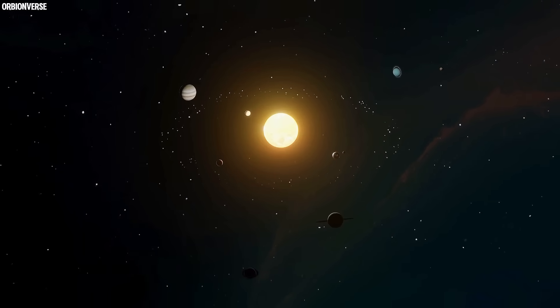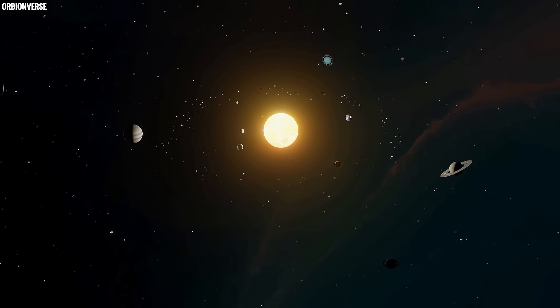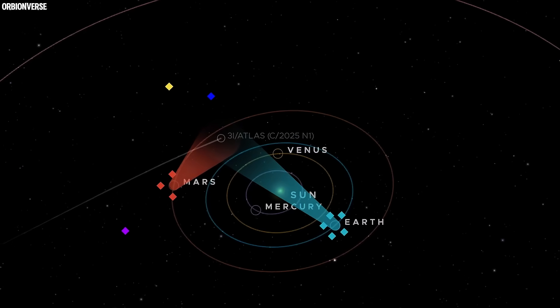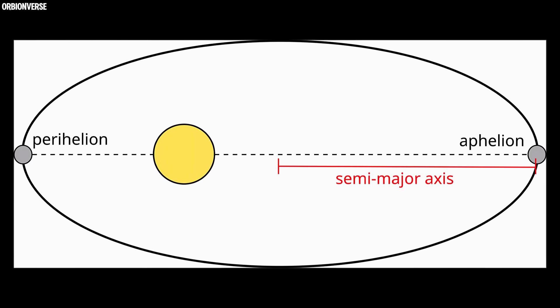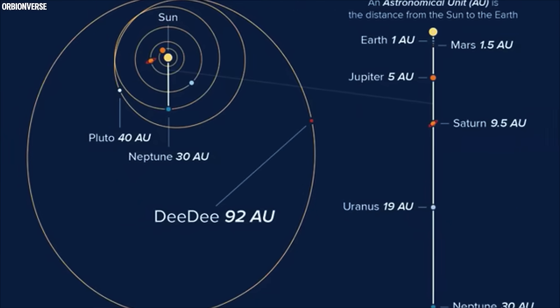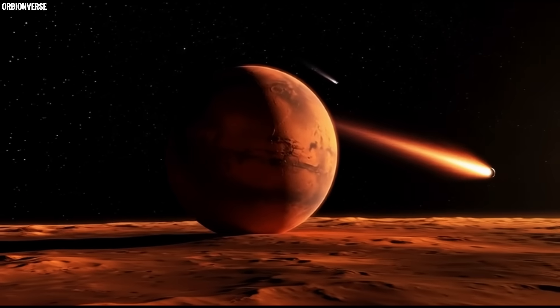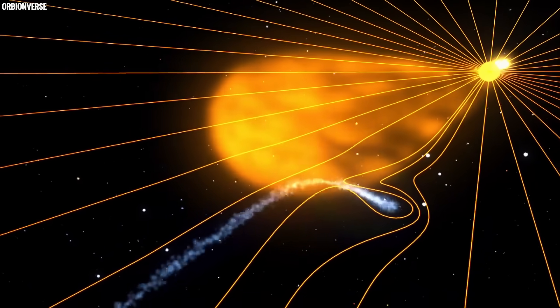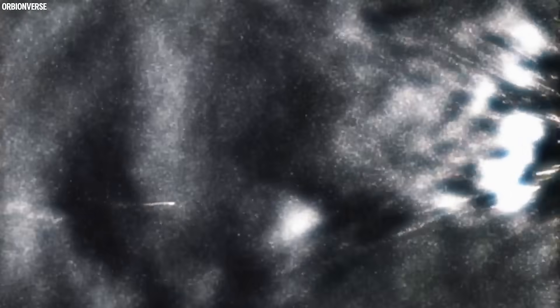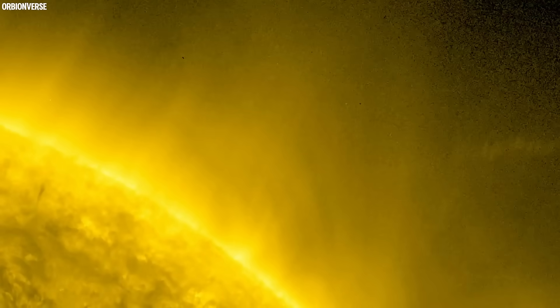And now, as it plunges toward the sun, scientists prepare for the moment of truth. On October 29th, 2025, 3I/ATLAS will reach perihelion, its closest point to the sun, just 1.4 astronomical units away, roughly 210 million kilometers, brushing the orbit of Mars. For most comets, perihelion is the breaking point. The sun's heat can vaporize surface ices, fracture the core, or even disintegrate the entire nucleus in a bright, violent burst. But for an interstellar comet like 3I/ATLAS, this is uncharted territory.